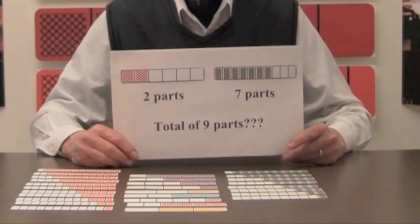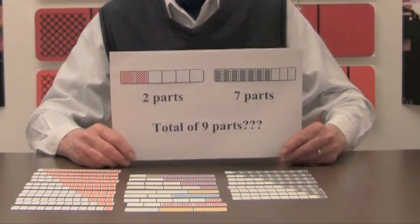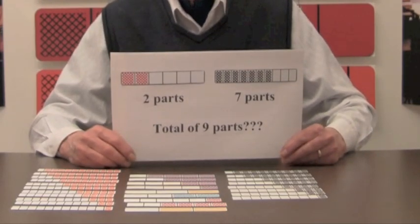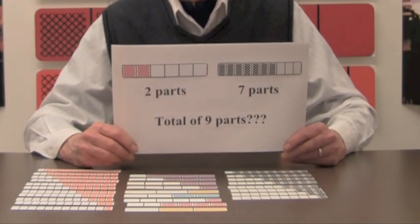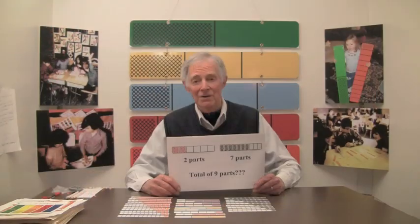For example, one of these bars has two parts out of six shaded, and the other bar has seven parts out of ten shaded. The total of nine shaded parts for these two bars does not give good information, since the parts of the bars have different sizes.